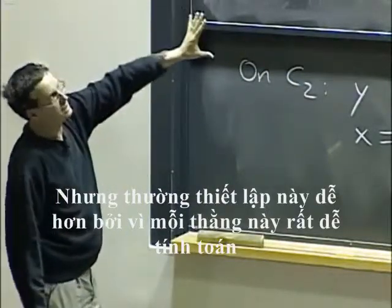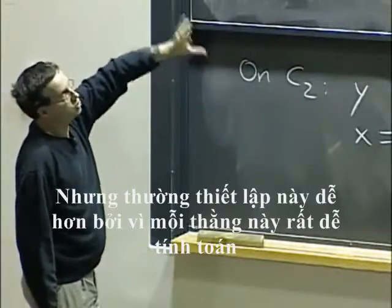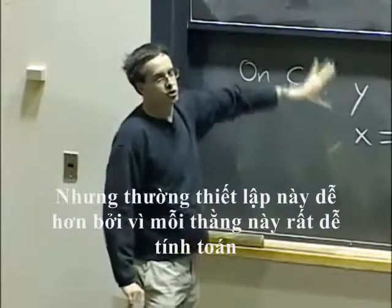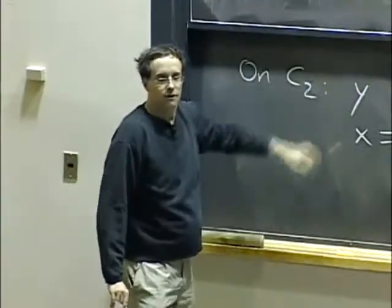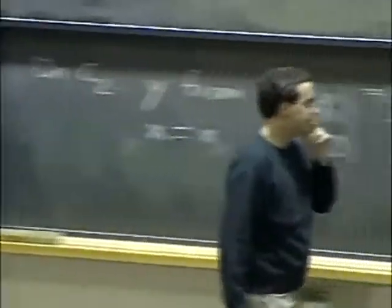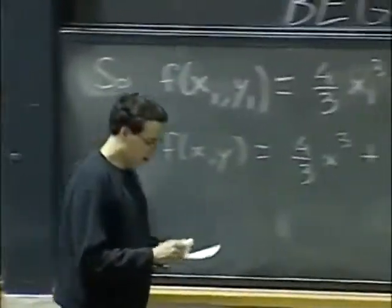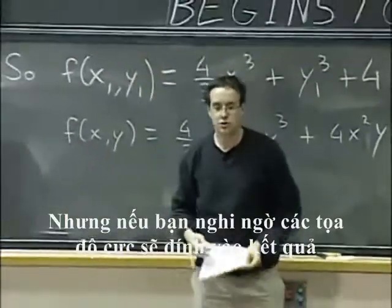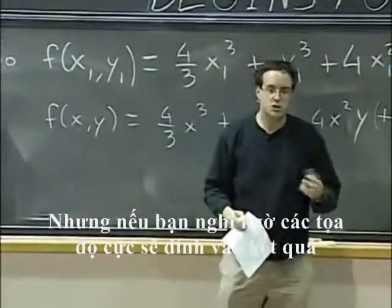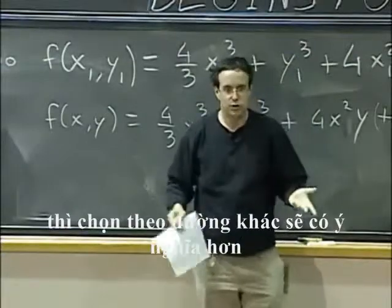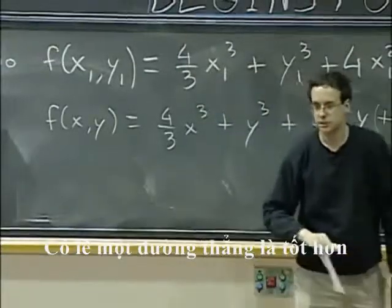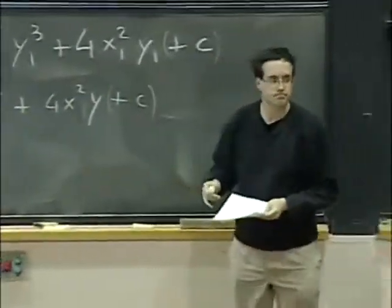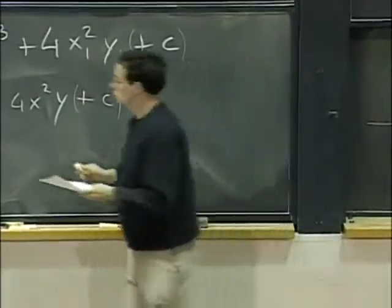But usually this setting is easier just because, you see, each of these two guys was actually very easy to compute. But somehow, maybe if you suspect that polar coordinates will be involved somehow in the answer, then maybe it makes sense to choose different paths. Maybe a straight line is better.